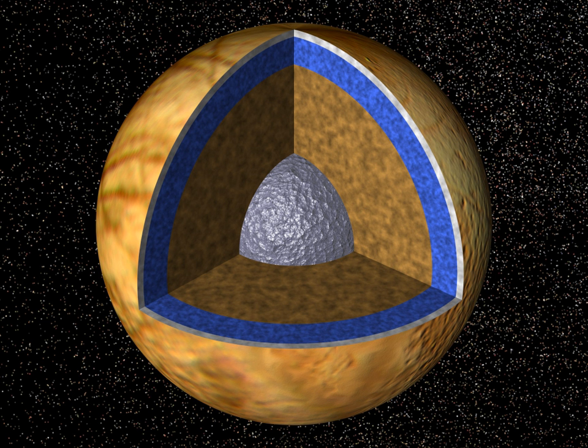Since water is highly soluble in magma, a large fraction of the planet's water content will initially be trapped in the mantle. As the planet cools and the mantle begins to solidify from the bottom up, large amounts of water — between 60% and 99% of the total amount in the mantle — are exsolved to form a steam atmosphere, which may eventually condense to form an ocean. Ocean formation requires differentiation and a heat source, either radioactive decay, tidal heating, or the early luminosity of the parent body.